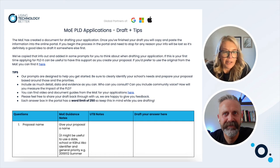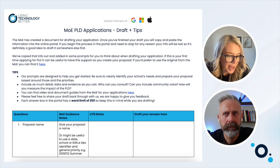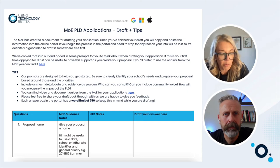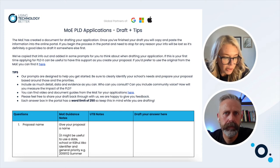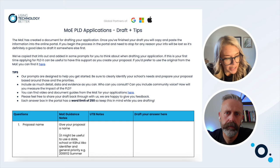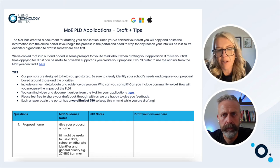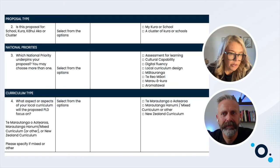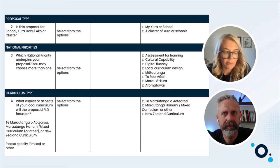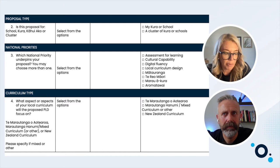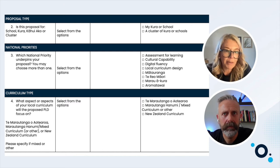Question one asks for a proposal name — this is the name shown on the portal. It might be useful to use a date or a particular priority, for example 'Integrating Localised Curriculum' and then your school name. Super simple, just don't overthink it. Question two asks whether the proposal is for your school or kura, or for a kāhui ako or cluster. Select the appropriate answer and whether you're working in English medium or Māori medium.